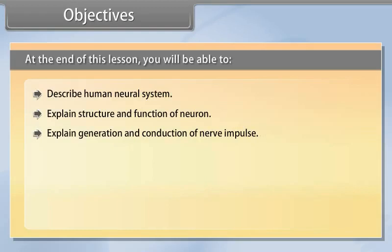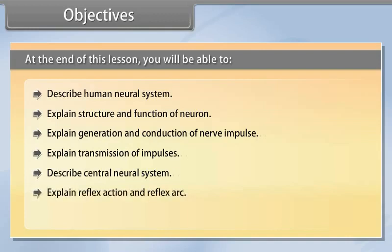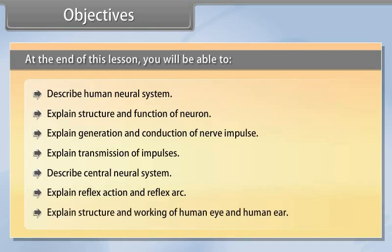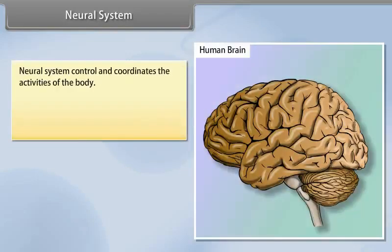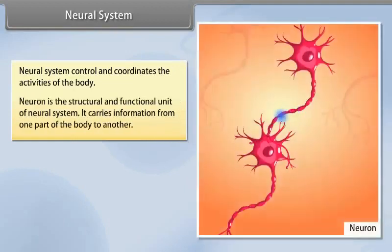Explain transmission of impulses, describe central neural system, explain reflex action and reflex arc, explain structure and working of human eye and human ear. Neural system controls and coordinates the activities of the body. Neuron is the structural and functional unit of neural system. It carries information from one part of the body to another.